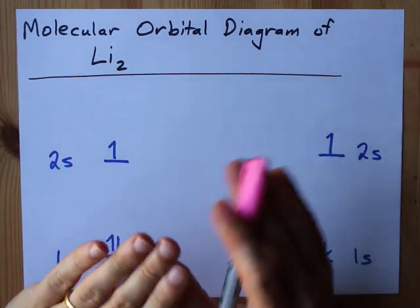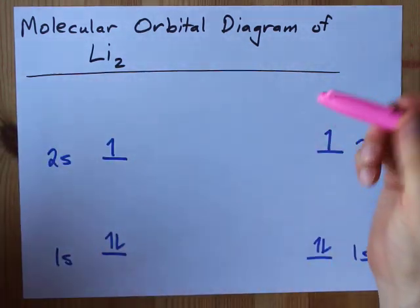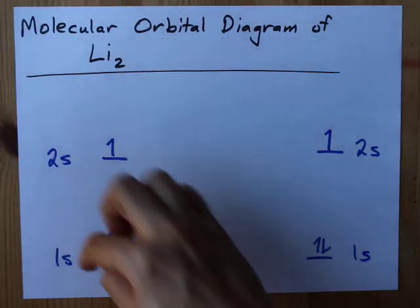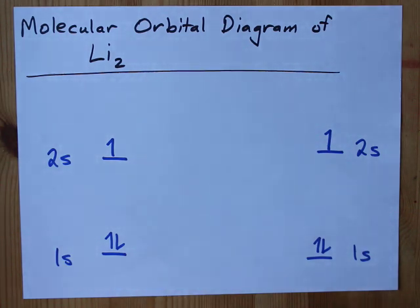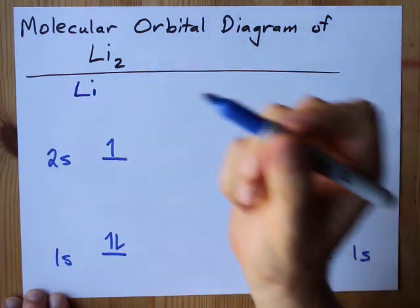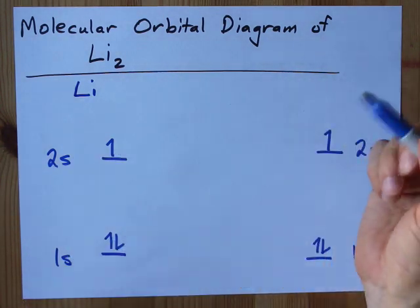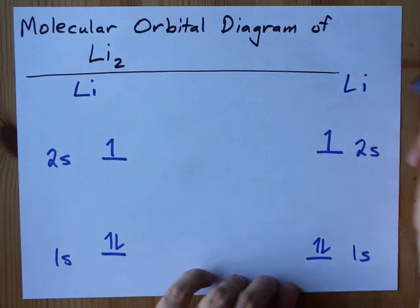Molecular orbital diagrams can be intimidating, but for Li₂ it is not. Let me show you. Here I've got the electron configuration diagram for one lithium atom. It is three electrons, 1s², 2s¹. And I have another one over here.